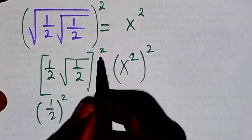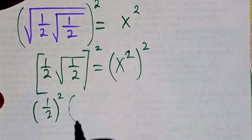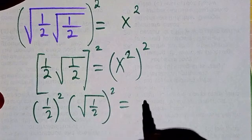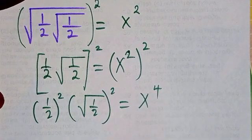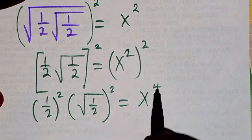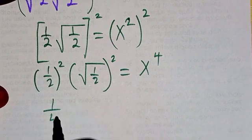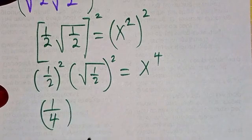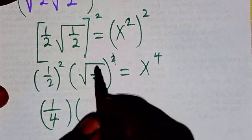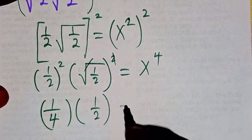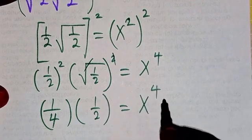Then we have root one over two to the power of two here will be x to power four, because two times two will give us four. So now from there, this is going to be one over four, then this we cancel, we have one over two equals x to power four.